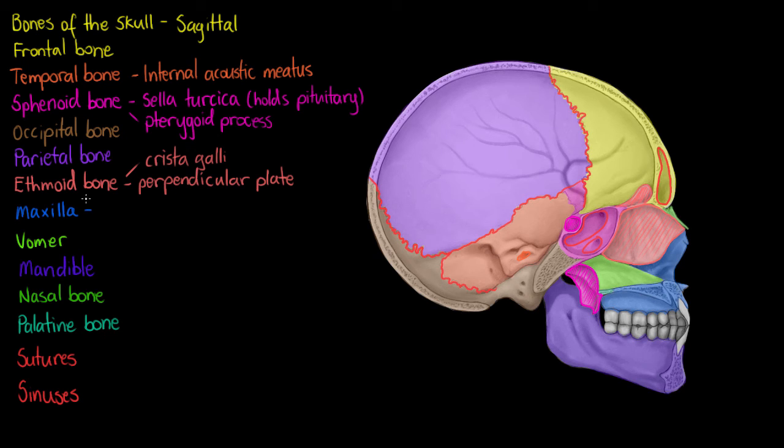Next on the maxilla bone we're going to see something called the palatine process. And the palatine process we also saw on the inferior view of the skull. So I'm just outlining it here. And if we remember correctly our palatine process and the palatine bone together made up our hard palate.